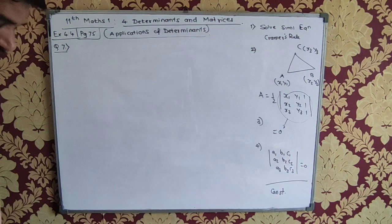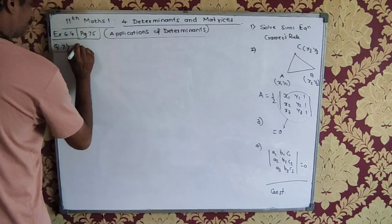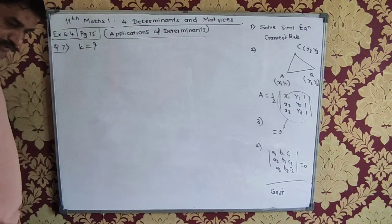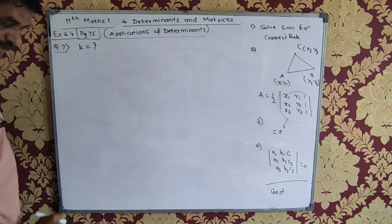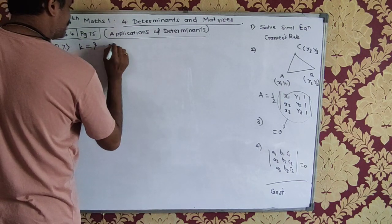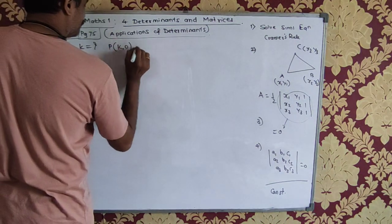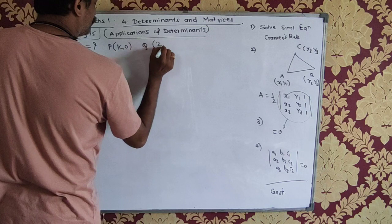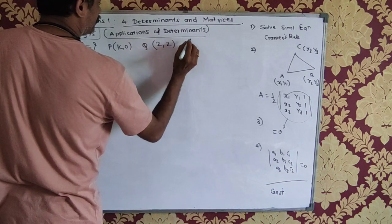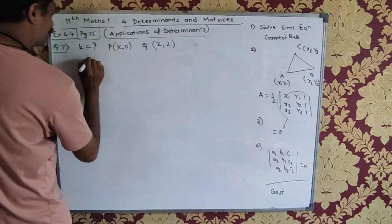Question number 7. Find the value of k if the area of the triangle whose vertices are P(k, 0), Q(2, 2) and R(4, 3).